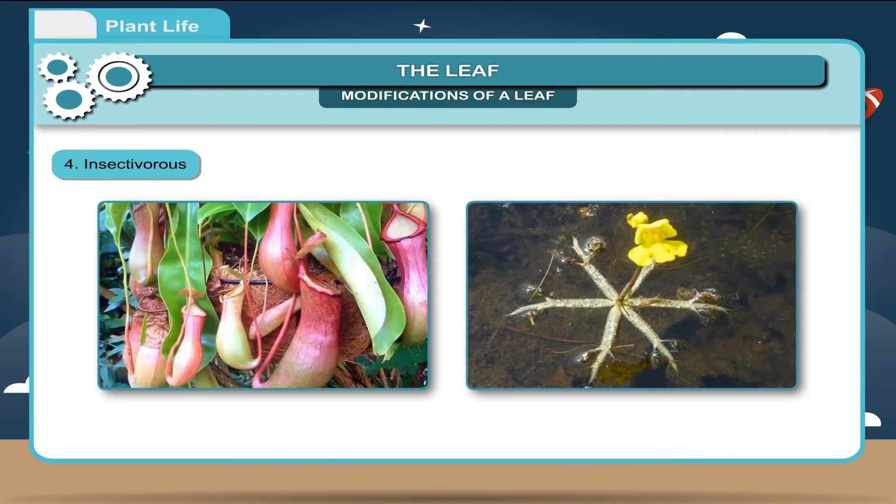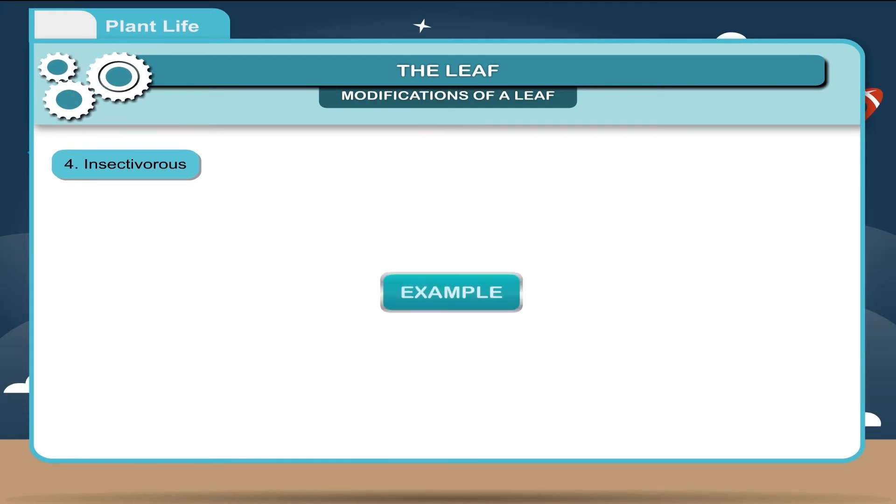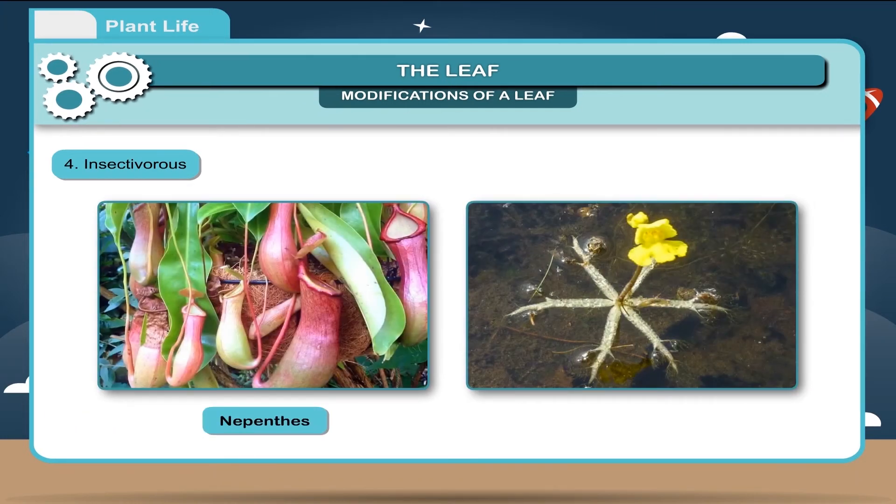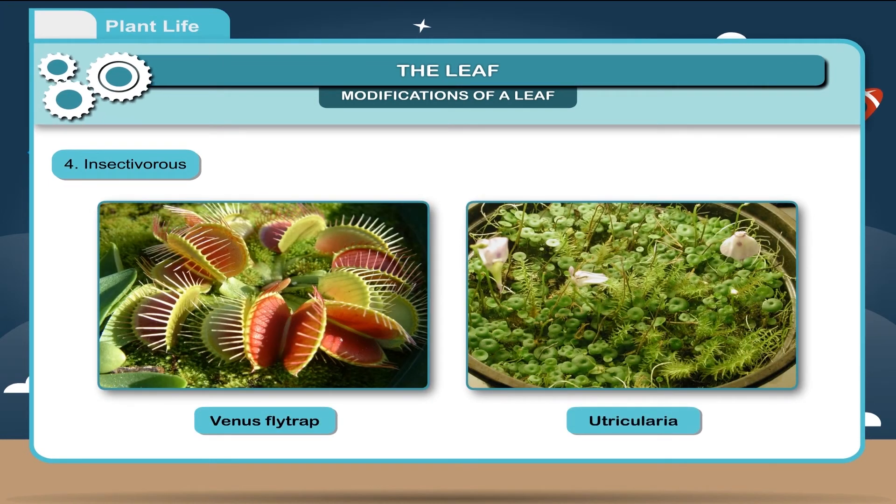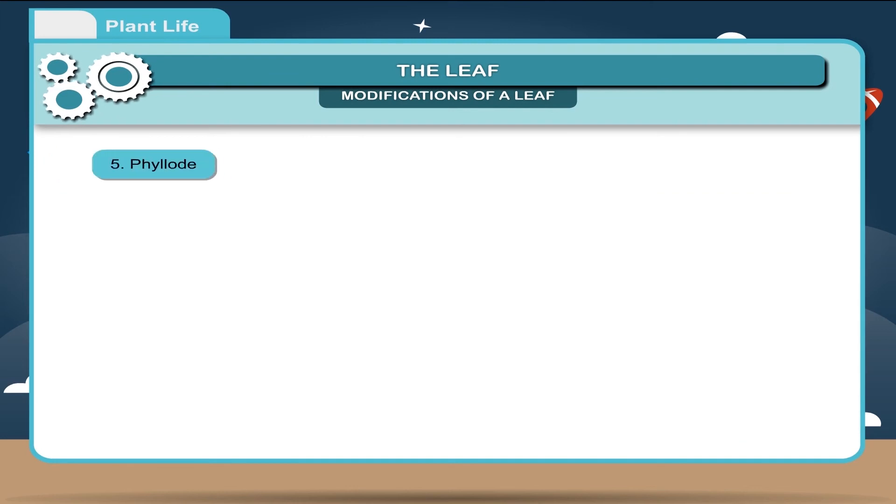Insectivorous. The leaves of some plants are modified into a bladder or pitcher to trap the insects. These plants are called insect eating or insectivorous plants. Example, nepenthes, bladderwort, venus flytrap, utricularia.